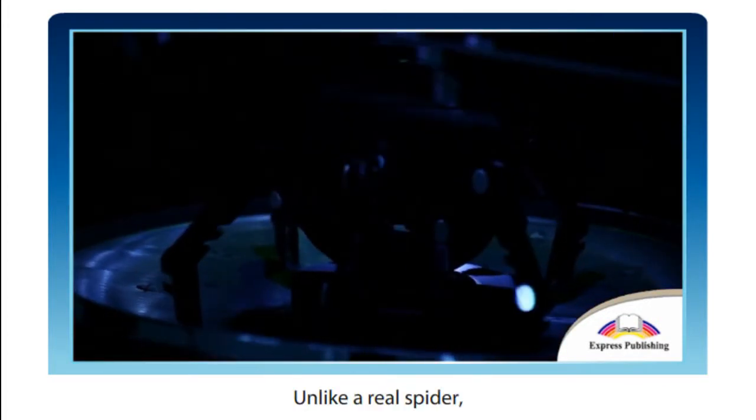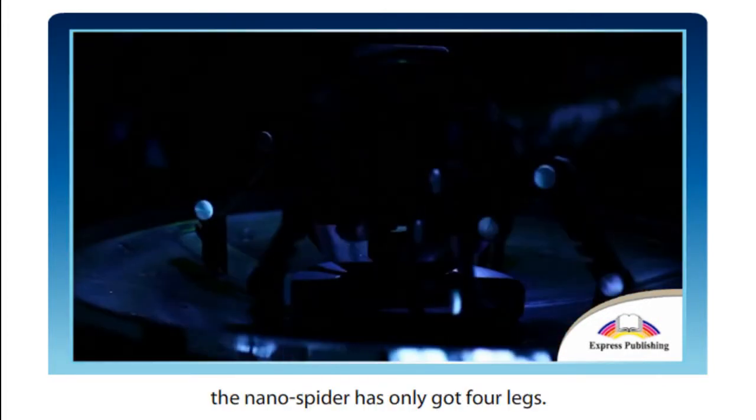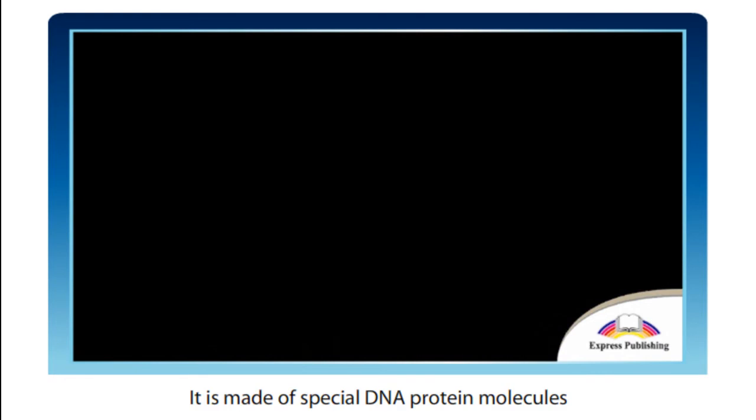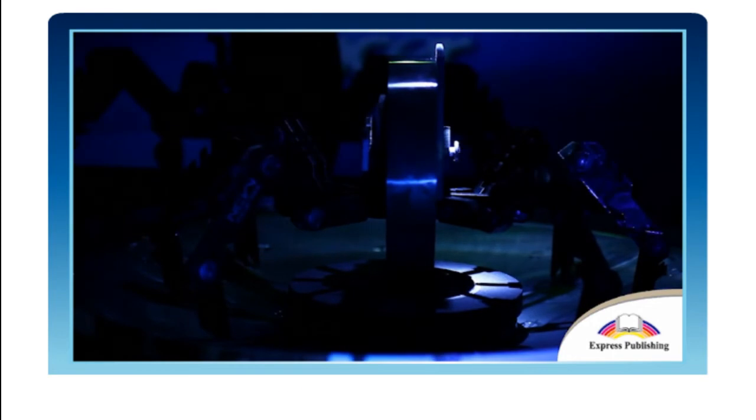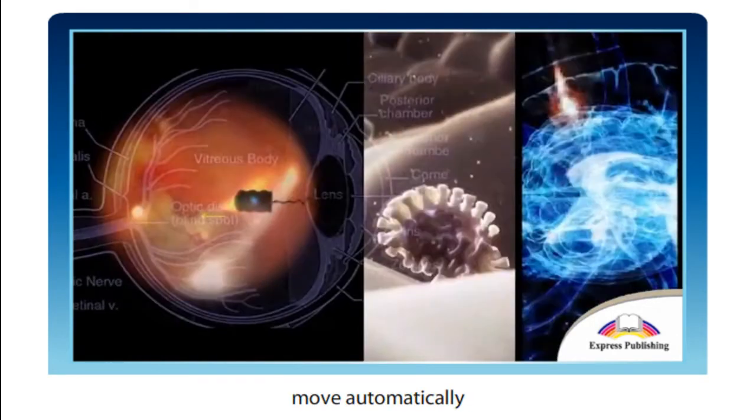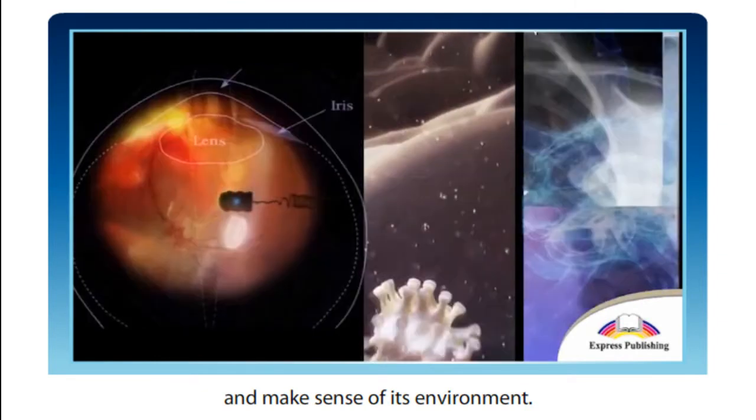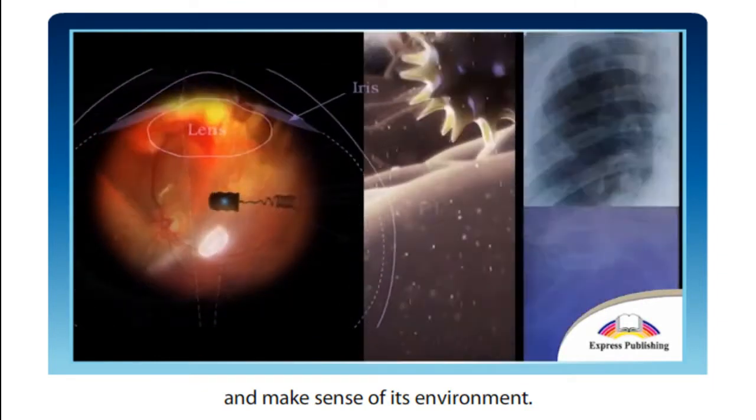Unlike a real spider, the nano spider has only got 4 legs. It is made of special DNA protein molecules and it is a proper robot. It can make decisions, move automatically and make sense of its environment.